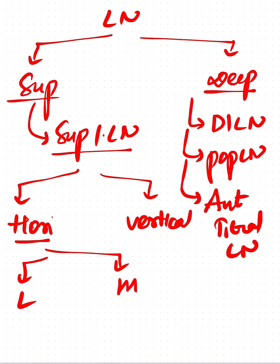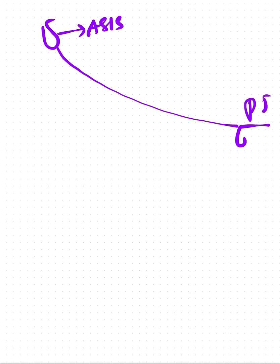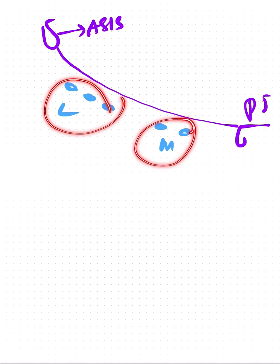Now let us talk about the superficial lymph nodes, which include the superficial inguinal lymph node. Consider this as the inguinal ligament — the anterior superior iliac spine and the pubic tubercle. These superficial inguinal lymph nodes have horizontal members: these are the horizontal lateral members, and these are the horizontal medial members.